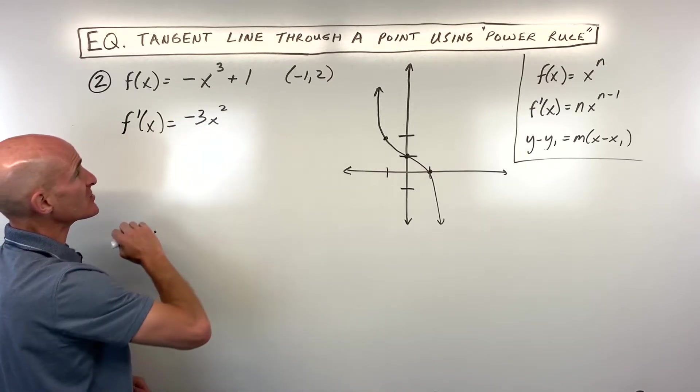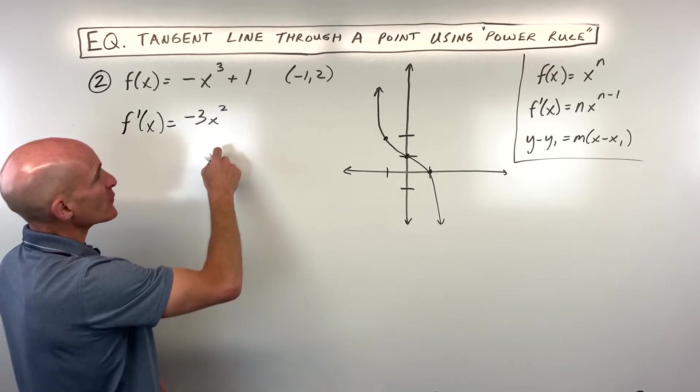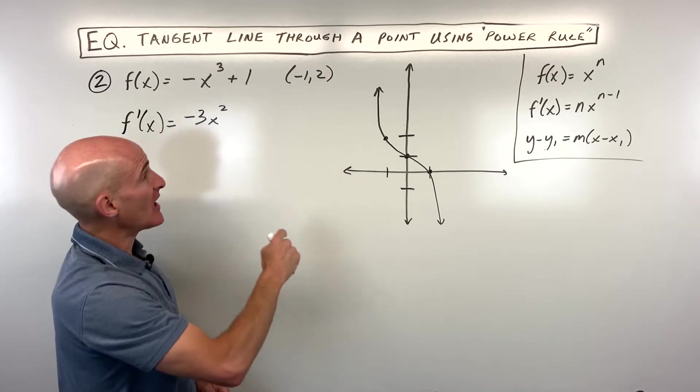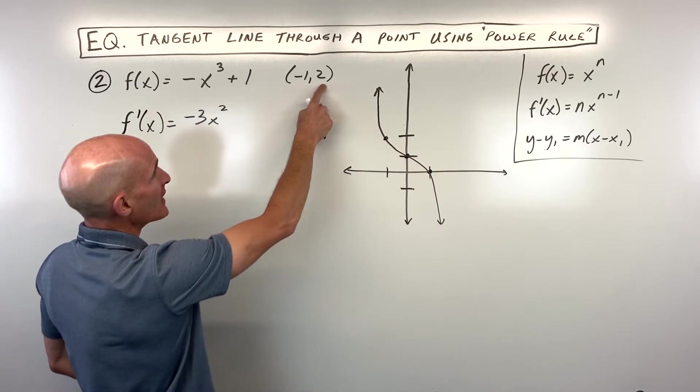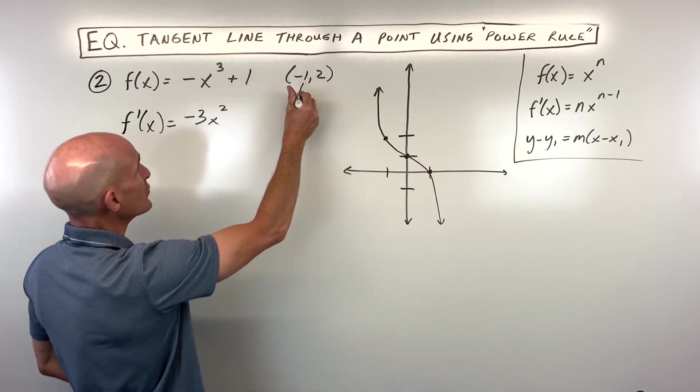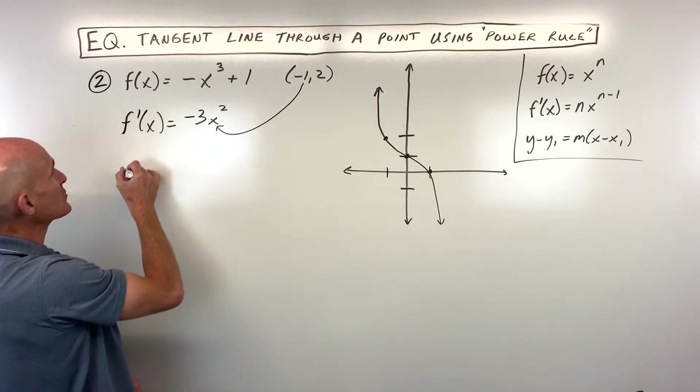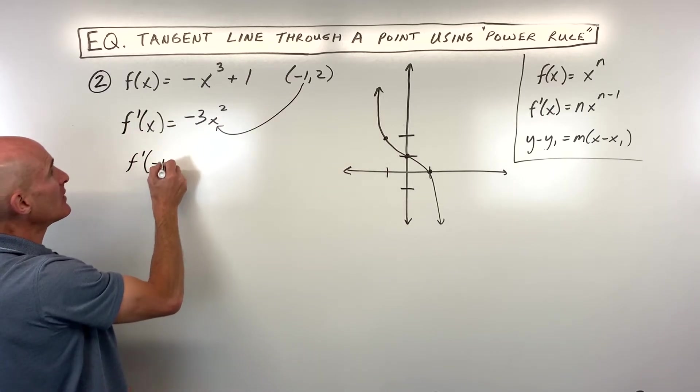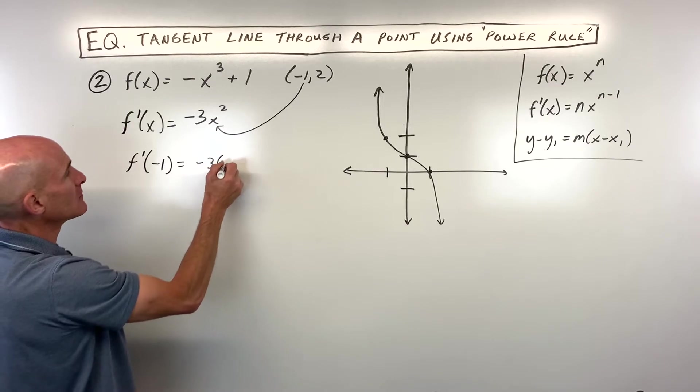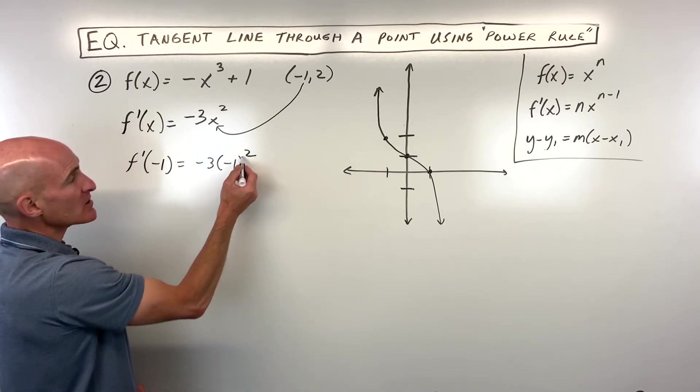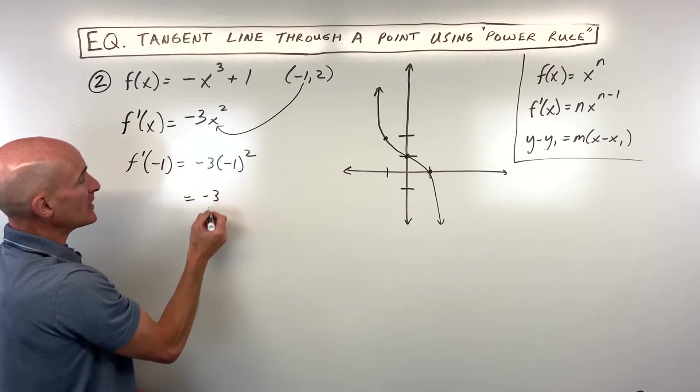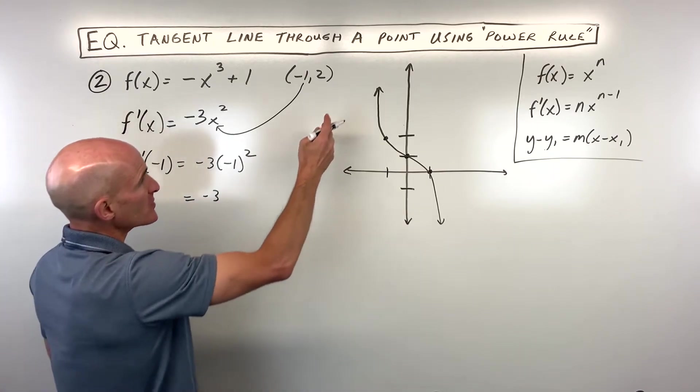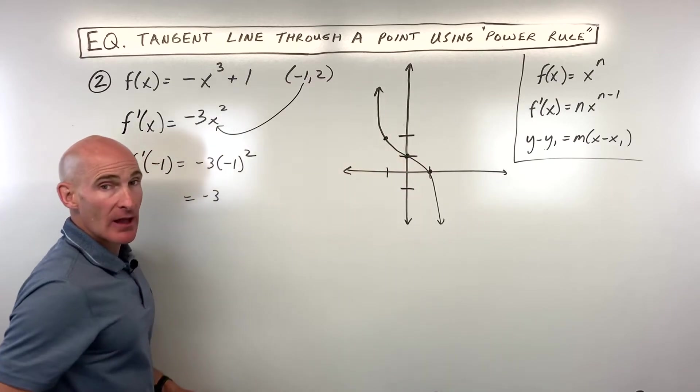Now we have our derivative, which is a formula for the slope of our tangent line at any point along this curve. But we're interested in this point negative 1, 2. So we're going to put this negative 1 in place of x, calculating f prime of negative 1. Negative 1 squared is 1 times negative 3 is negative 3. So the slope is negative 3 at that point.